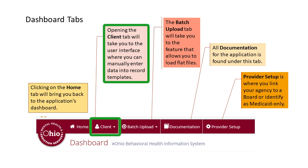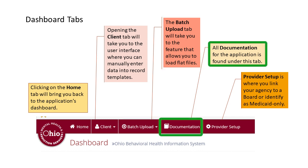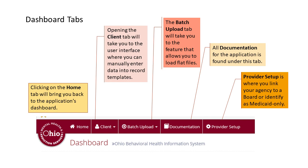Opening the client tab will take you to the user interface where you can manually enter data into record templates. The batch upload tab will take you to a feature that allows you to load flat files. All documentation for the application is found under the documentation tab. Provider setup is where you link your agency to a board or identify as Medicaid only. The provider setup must be completed by your agency's provider administrator at least one time in order for Ohio MHAS to process OBIS records.